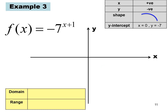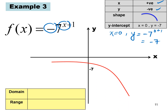For the example f(x) = −7^(x+1): x is positive, y is negative. The shape is below the x-axis. At x = 0, y = −7^(0+1) = −7, so the y-intercept is at −7. The domain is (−∞, ∞) and the range is (−∞, 0).